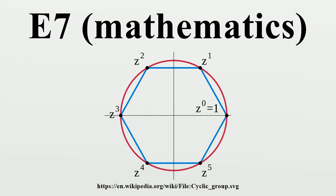E7 is an algebraic group. By means of a Chevalley basis for the Lie algebra, one can define E7 as a linear algebraic group over the integers and, consequently, over any commutative ring and in particular over any field.